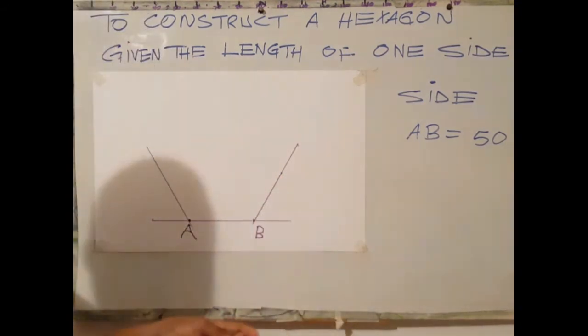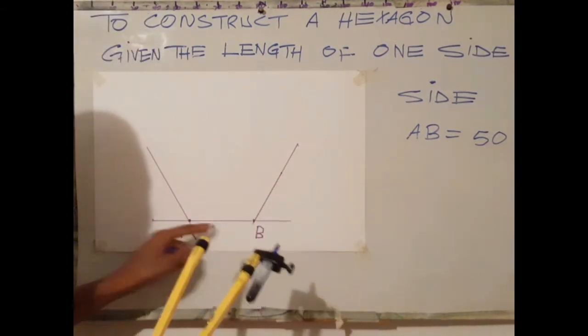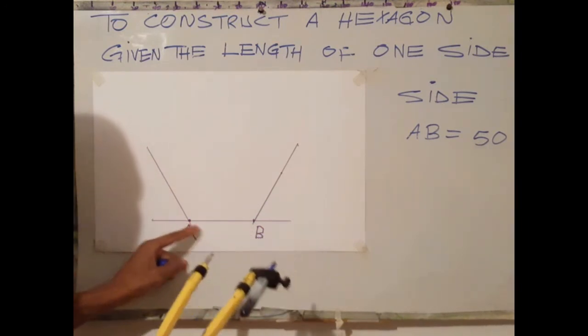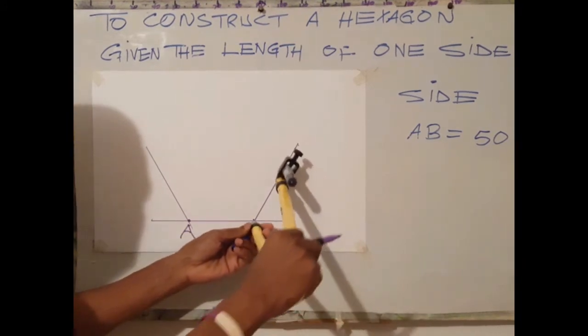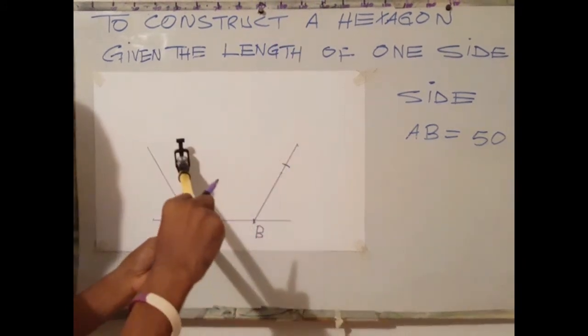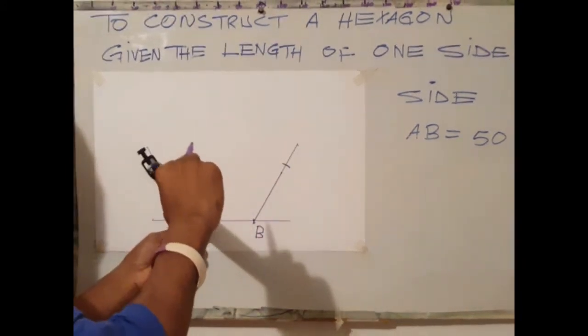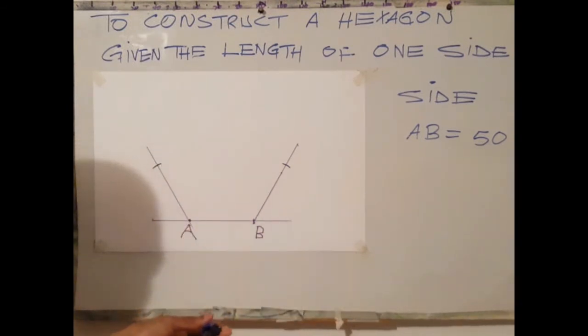The next step is to mark off 50 millimeters on both lines. So, here is my 50. Here is my 50.